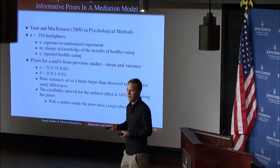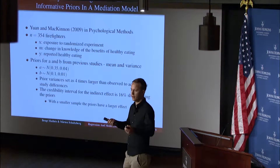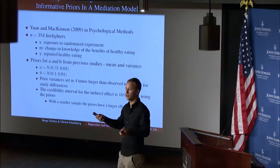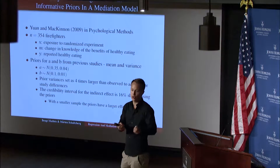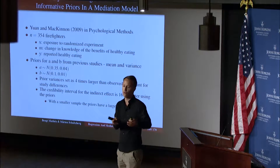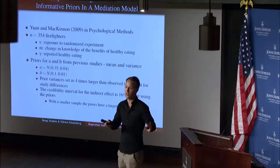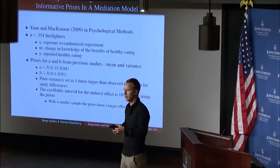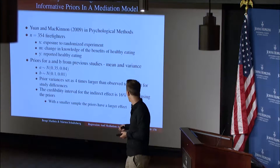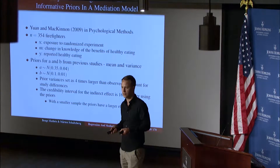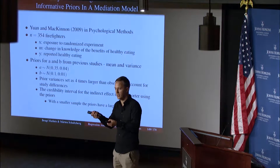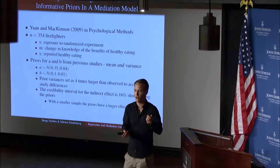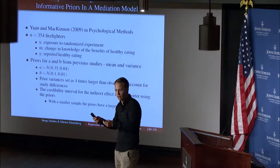When you think about the variance of the priors, you can think of them as weights. If you increase the variance of a prior, you give the prior information less weight compared to the likelihood and the data you've collected. It's always okay to increase the variance — that only makes the weight of the prior less. Making it smaller, however, would be much worse and could make results look like what you want. With a smaller sample the prior has a larger effect. Essentially, the sample size of your current data and the variance of the prior are the two competing weights.